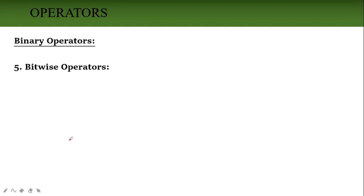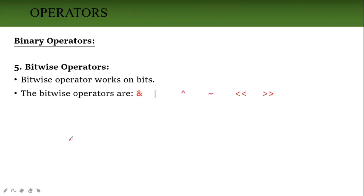Next, bitwise operator. Bitwise operators, as the name suggests, operate on bits. The bitwise operators are: AND (&), OR (|), left shift (<<), right shift (>>). While writing the program, I will explain how we use these operators.